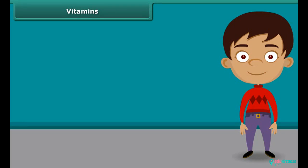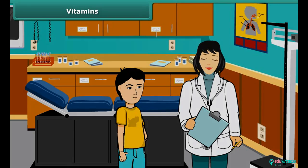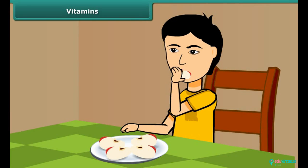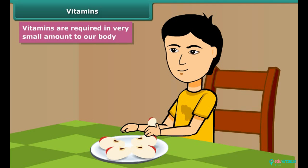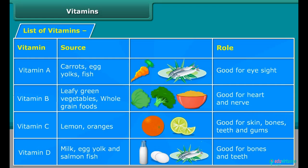When you get ill and go to the doctor, he advises you to take some fruits with light food because many of our body processes require vitamins present in foods and vegetables. They are required in very small amounts. Here is a list of vitamins, their sources and their roles.